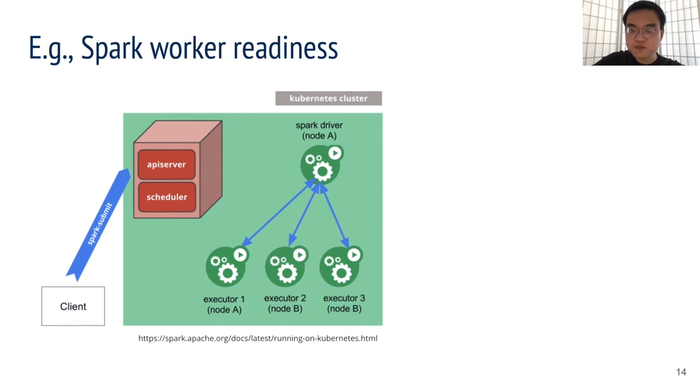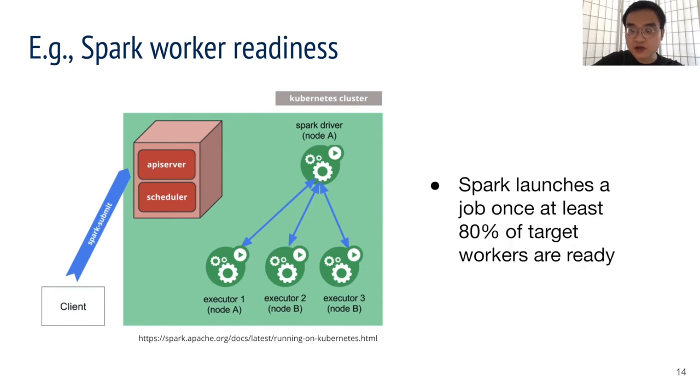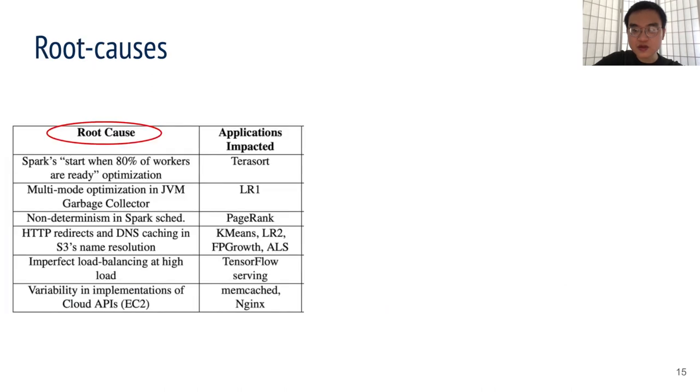To get an idea of root causes, let's see an example in Spark. Briefly, to run an application or job, the Spark driver will request workers to run its executor program. By default, Spark launches an application once at least 80% of the target worker nodes are ready. Because of this policy, the job might run with anywhere between 80 to 100% of workers depending on minor differences in launch times, and this can result in different job completion times.